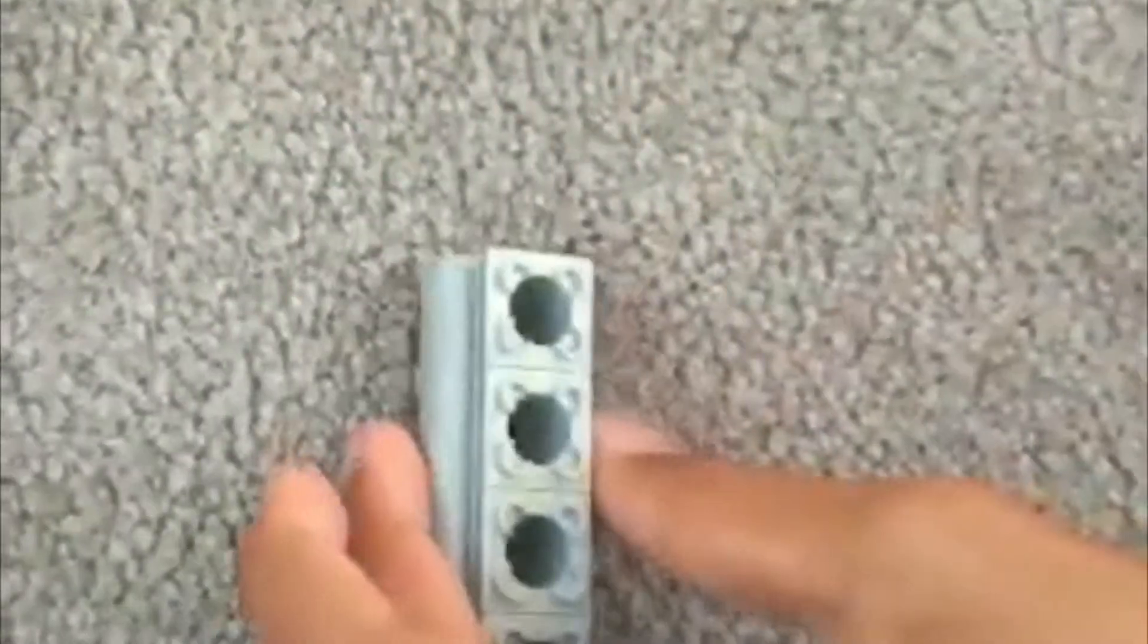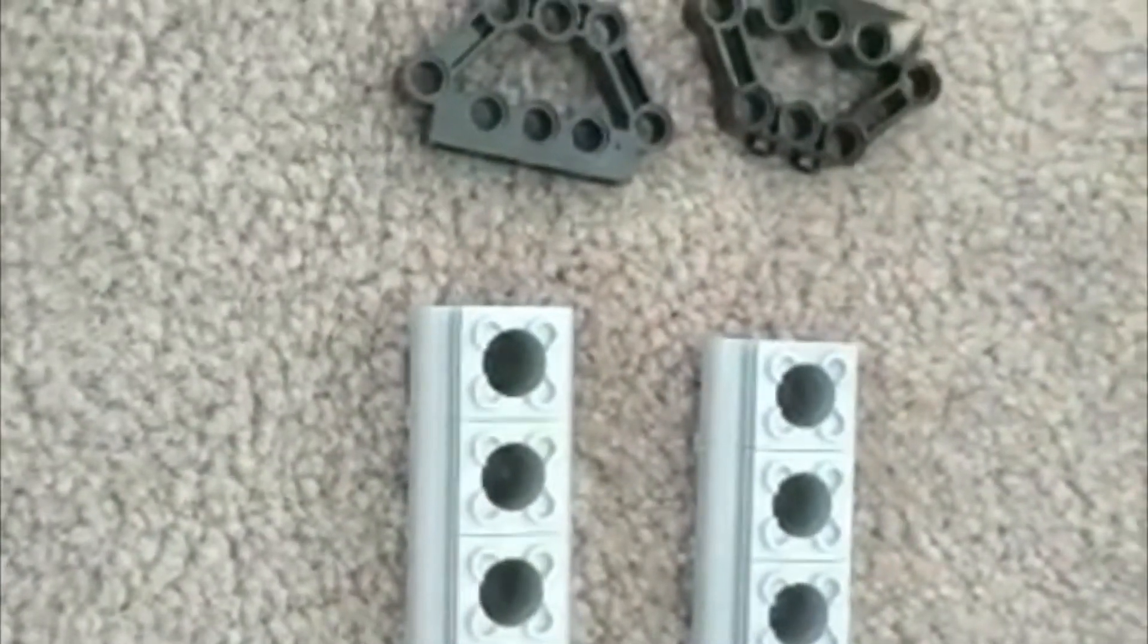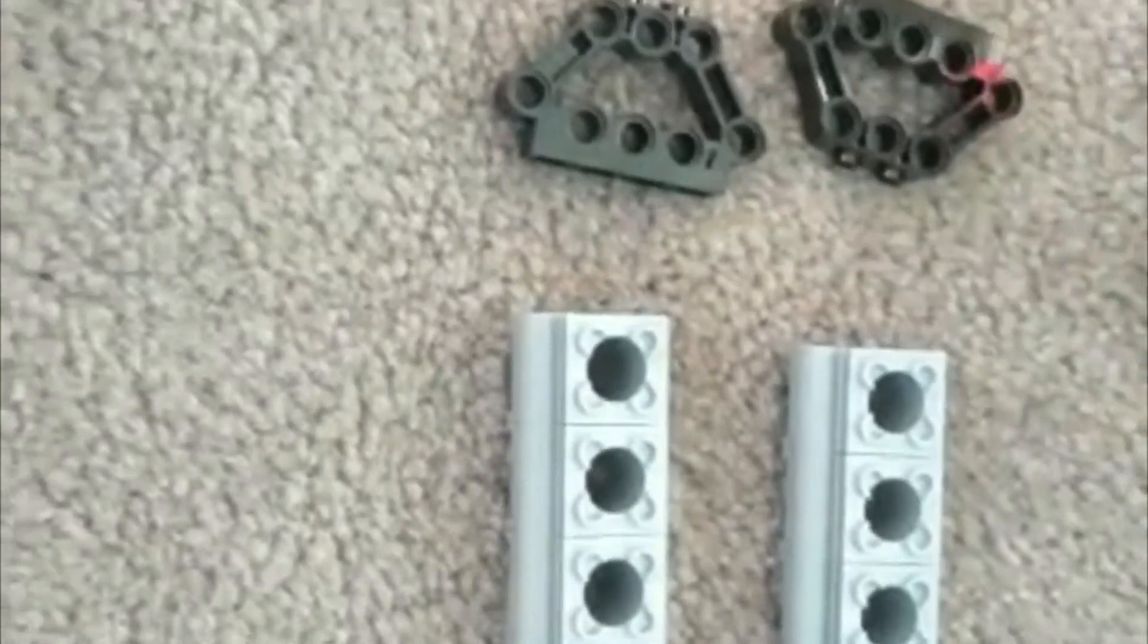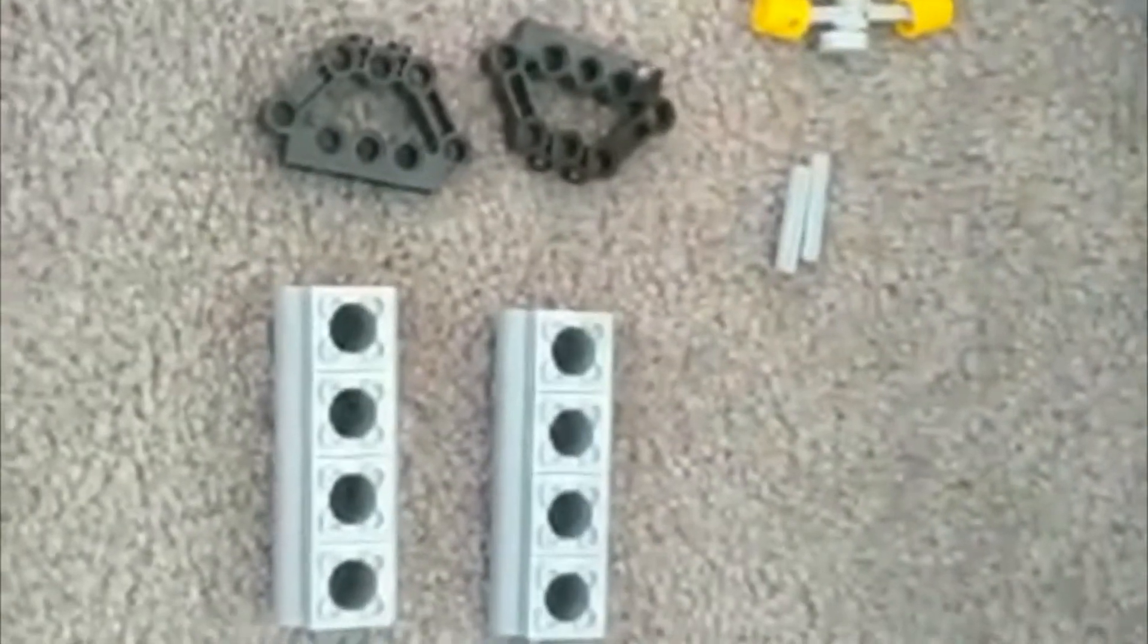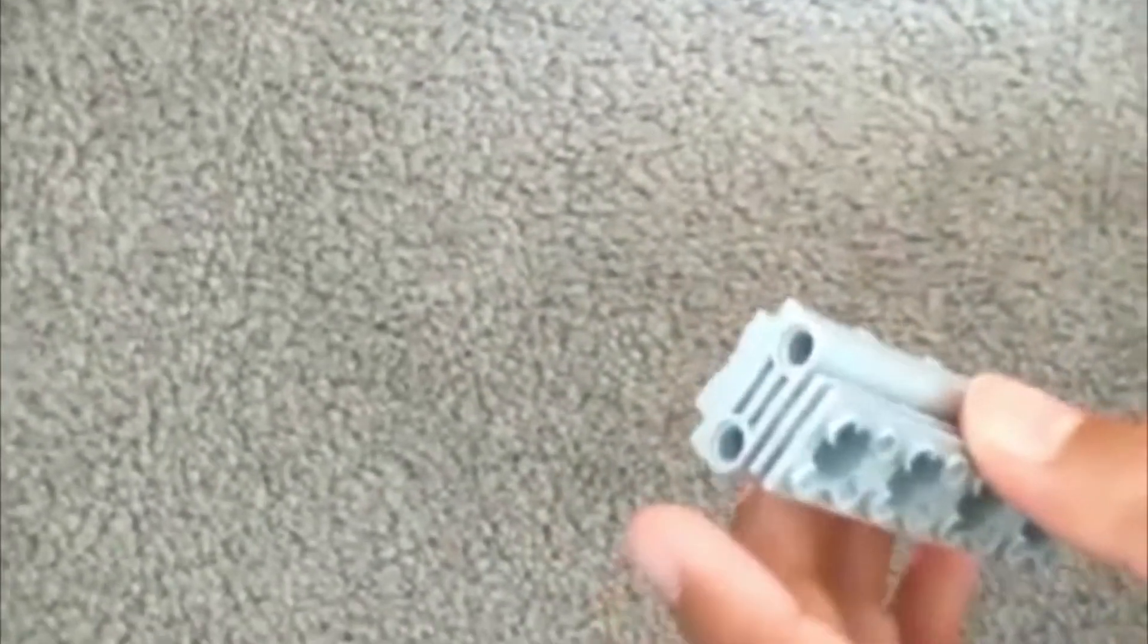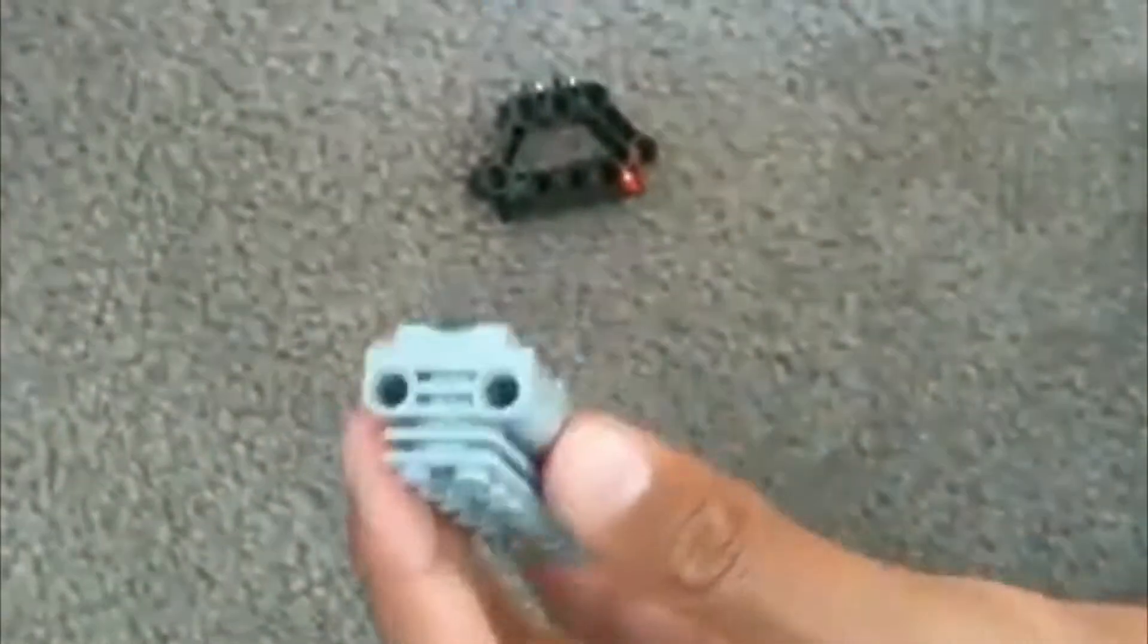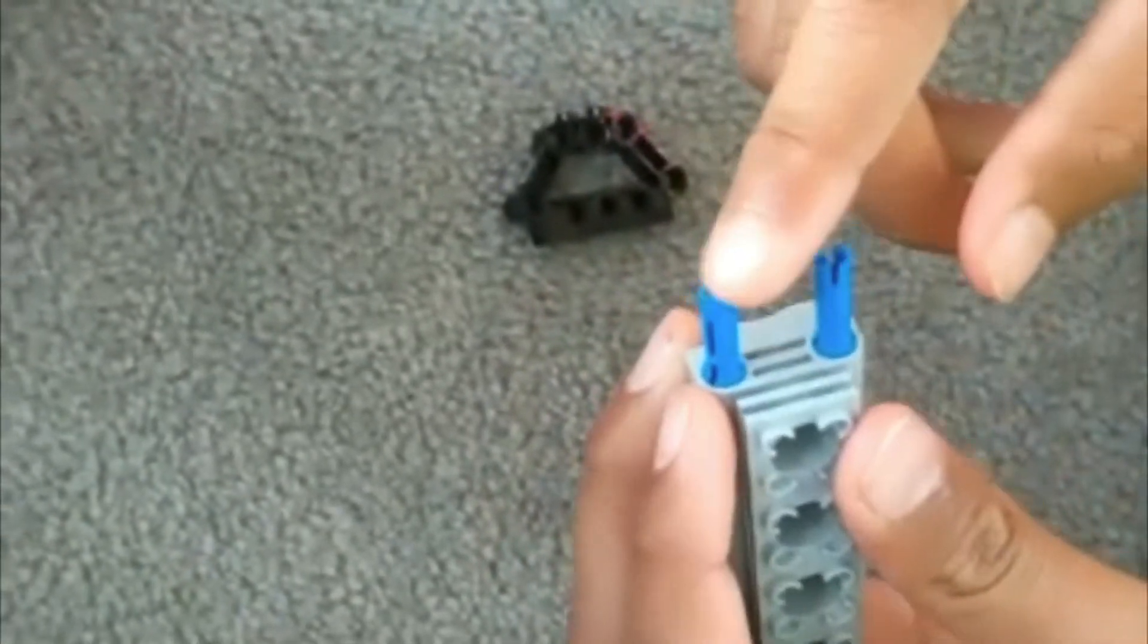So you get your piston holders, the black pieces, all the blue connectors, the piston arms, and the two axles. This is what you need for your last part. We will start with one of these. So you get two blue connectors and you place them in the holes.